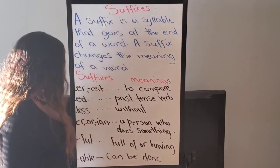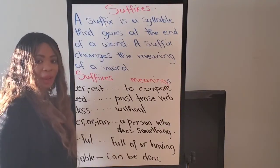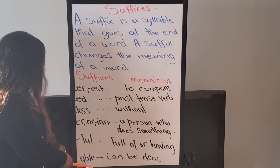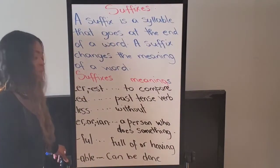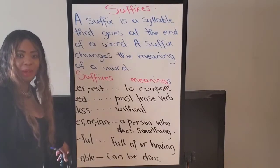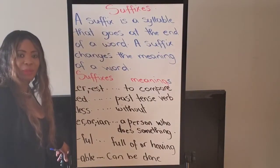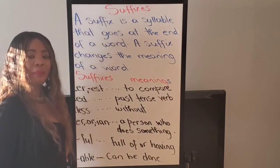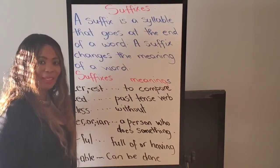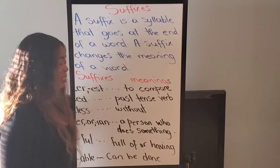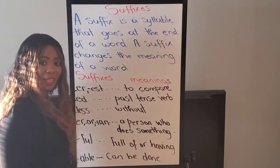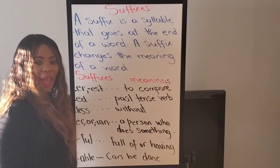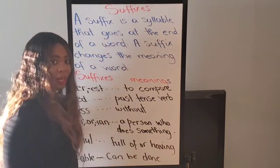ABLE — and it means it can be done. Once you see ABLE, it means that it can be done. This is 'manageable,' meaning you can manage it, you can do it. Remember, guys, suffixes are placed at the end of a word, and it changes the meaning.